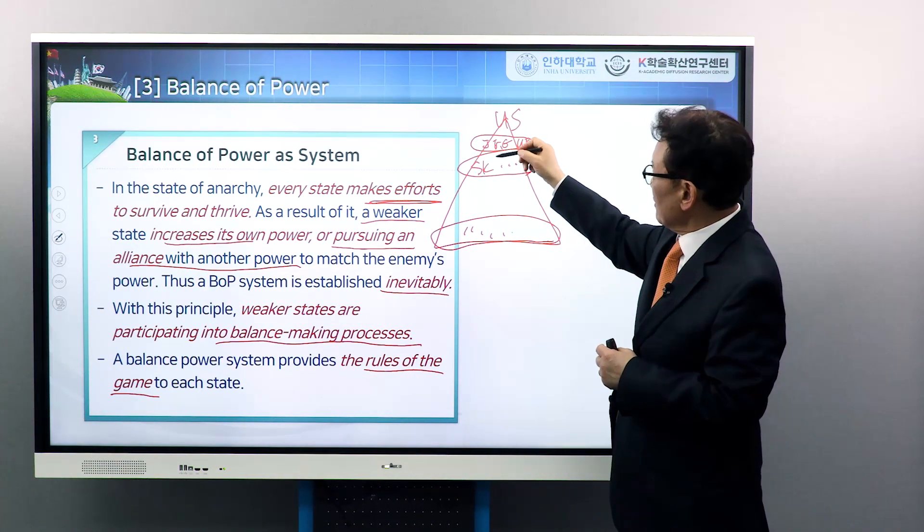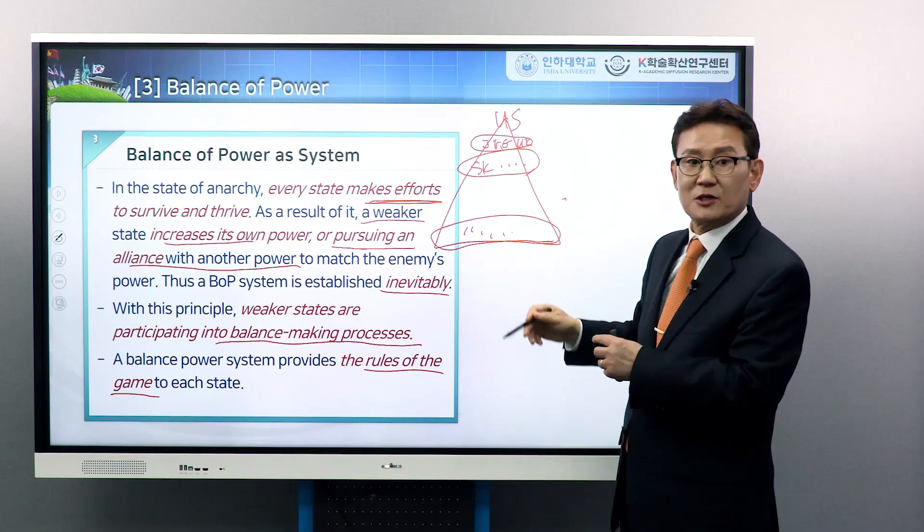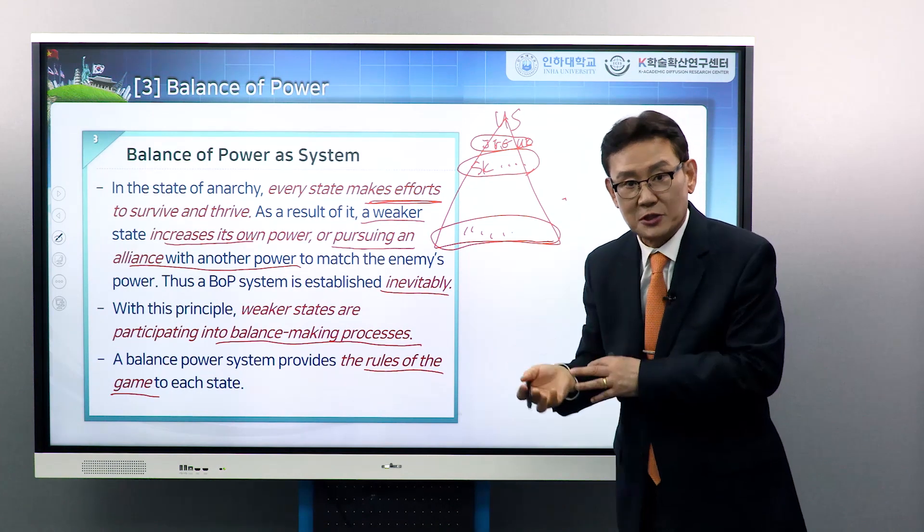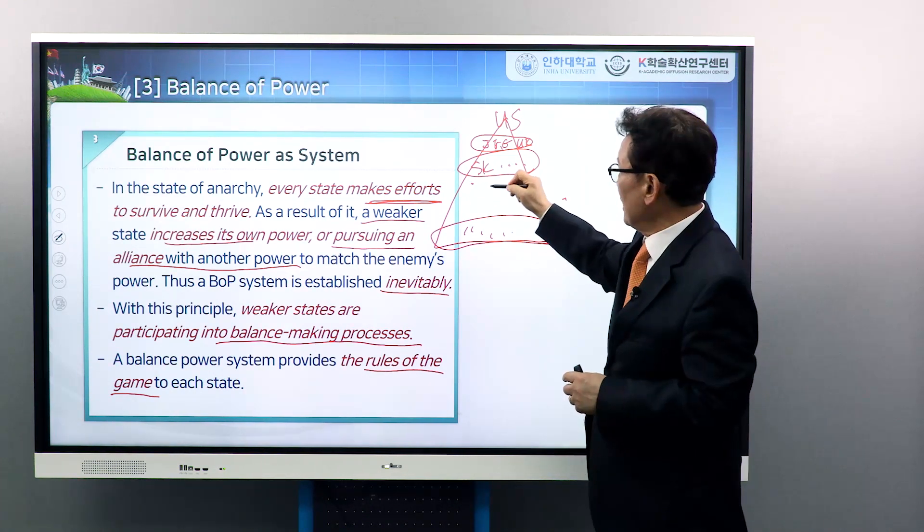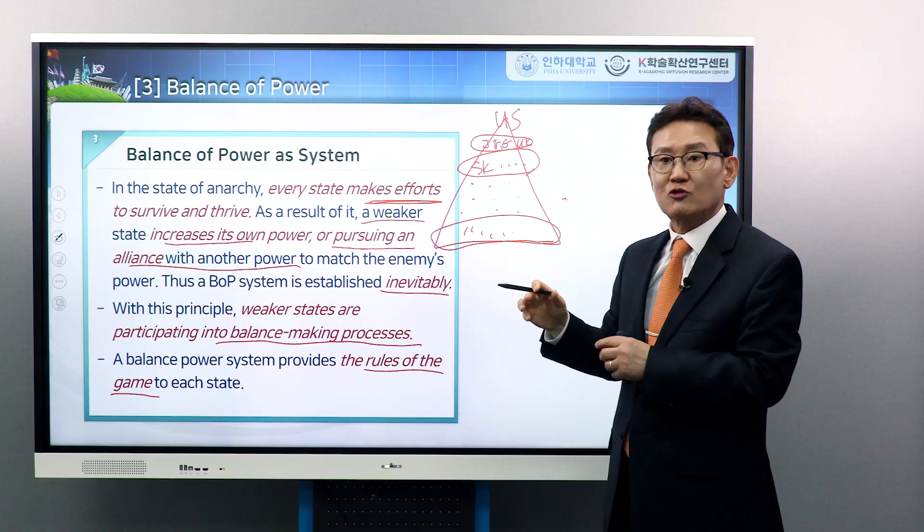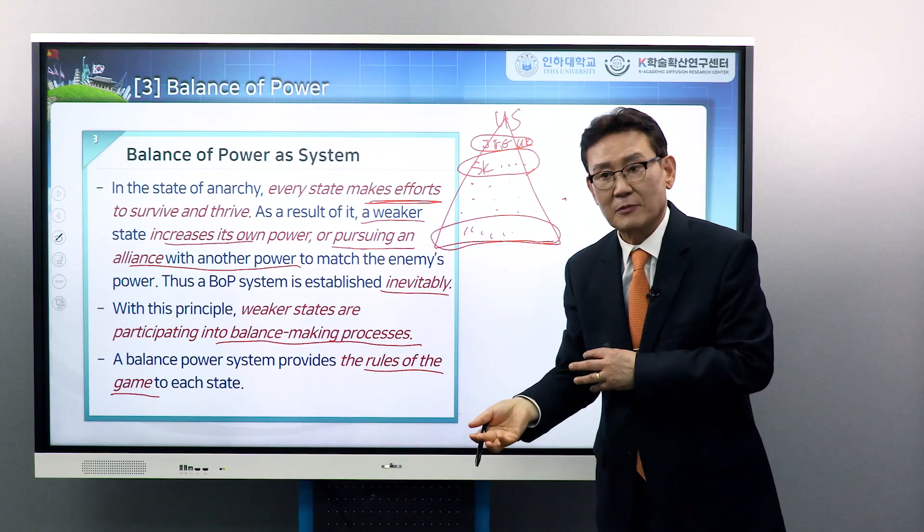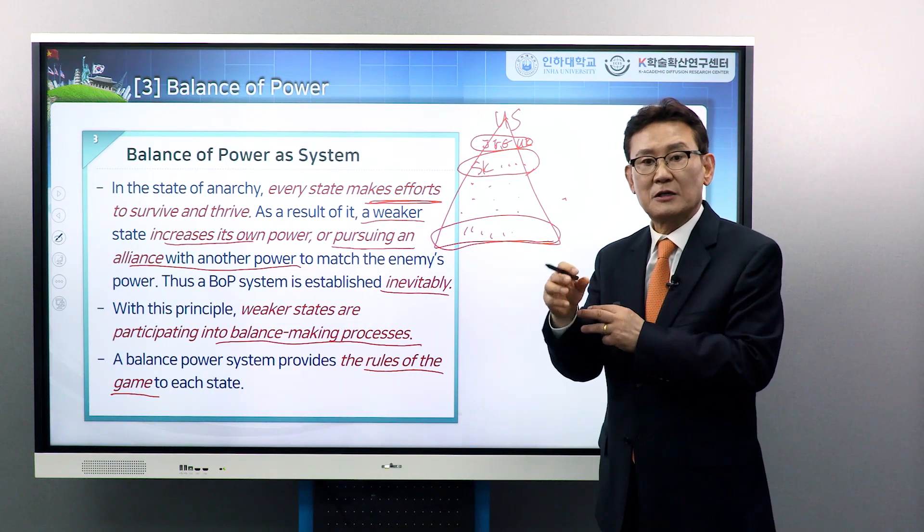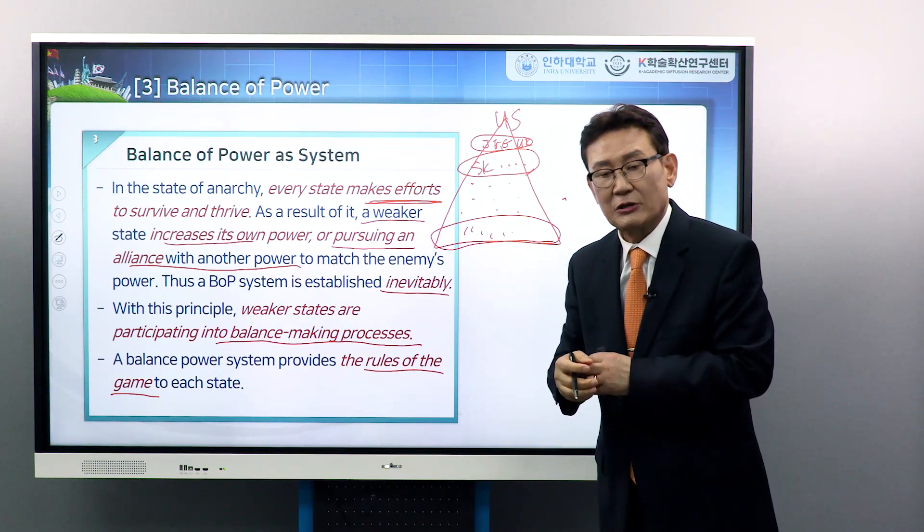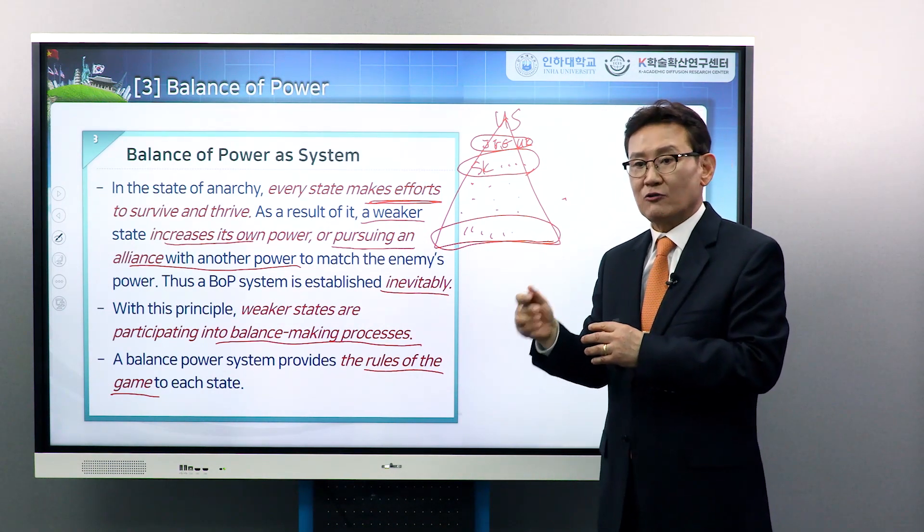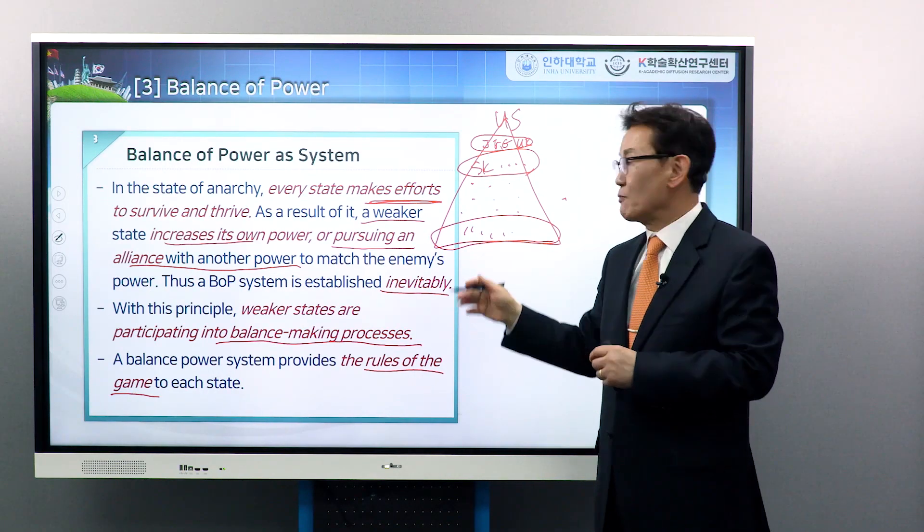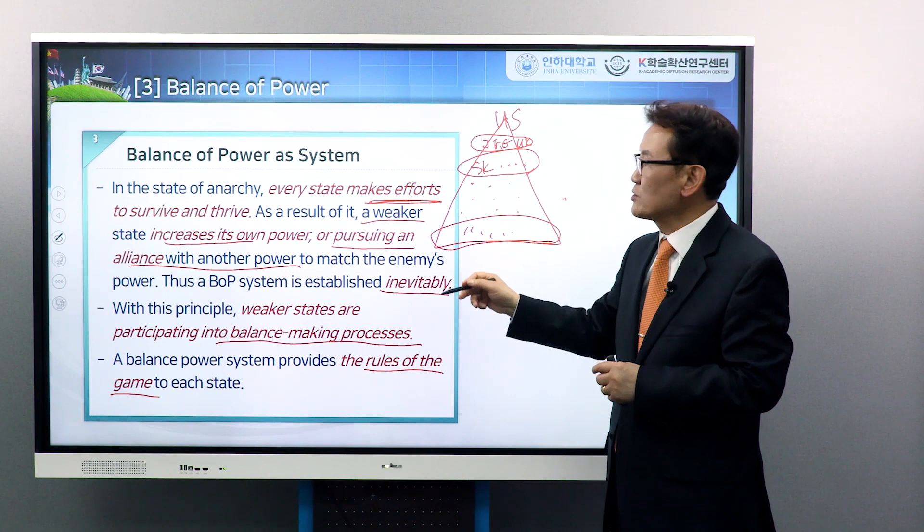Since this power structure provides the rules of the game, the so-called balance of power system, countries in any position of this power pyramid are trying to make alliances all the time. Because all countries are making similar functions, they always participate in the balance-making processes. So balance of power is used as a system.